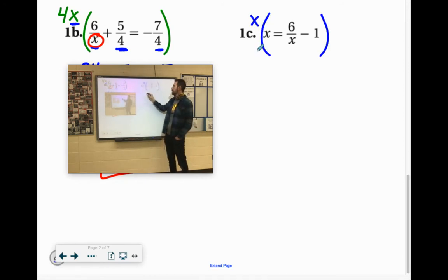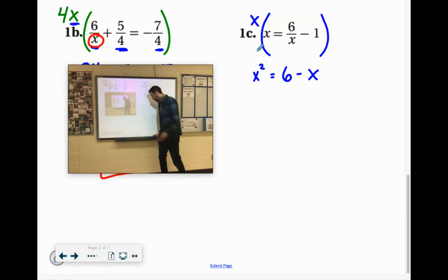Now x times x is x squared. Here we've got the x in the numerator and the denominator. Those will cancel out. So we'll just have 6. Or you can do x times 6 is 6x divided by x is 6 minus x times 1 is 1x.